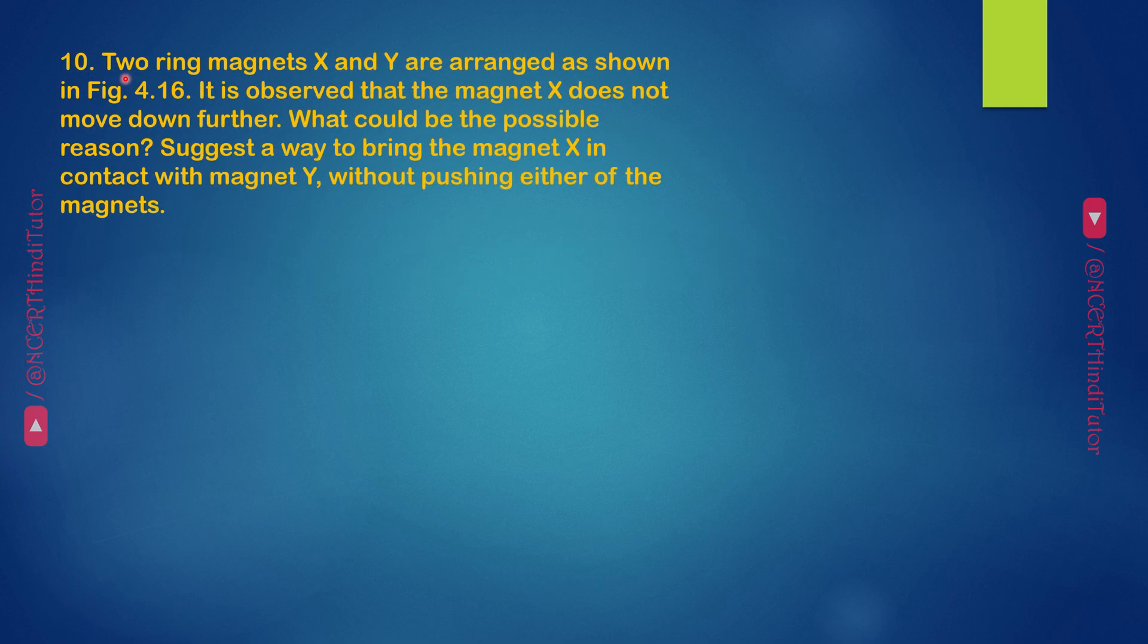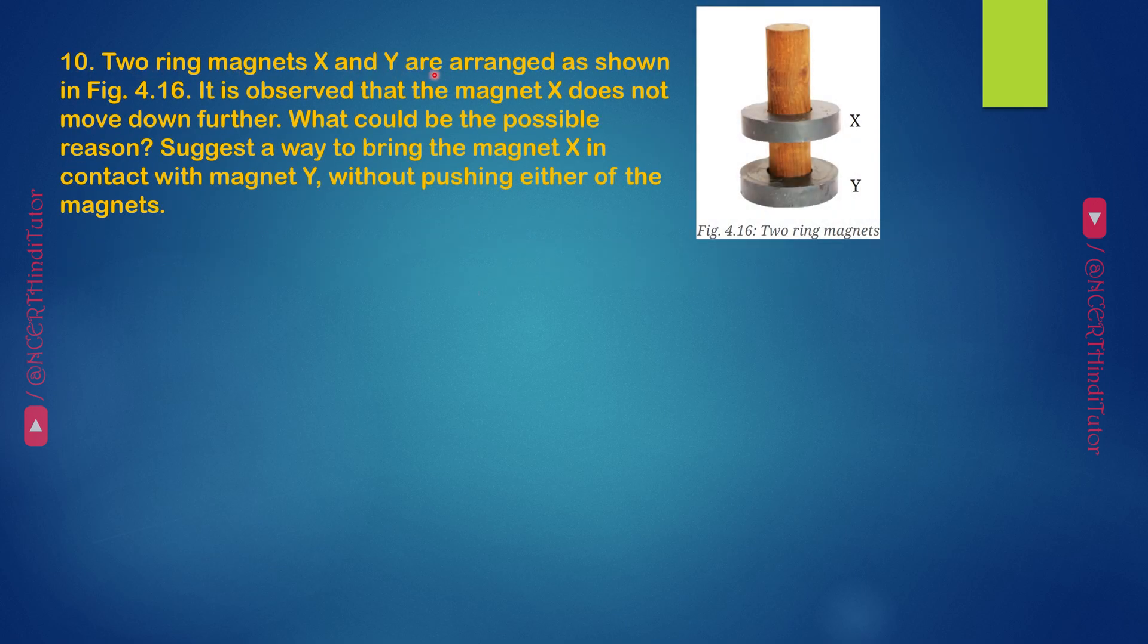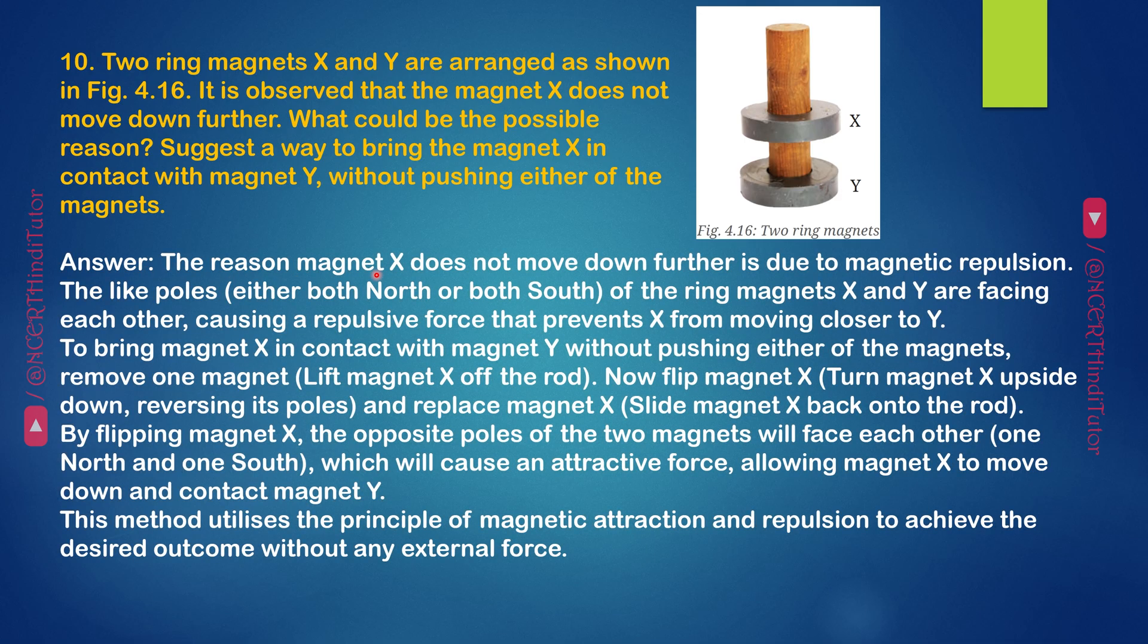Question 10: Two ring magnets X and Y are arranged as shown in figure 4.16. It is observed that the magnet X does not move down further. What could be the possible reason? Suggest a way to bring the magnet X in contact with magnet Y without pushing either of the magnets.